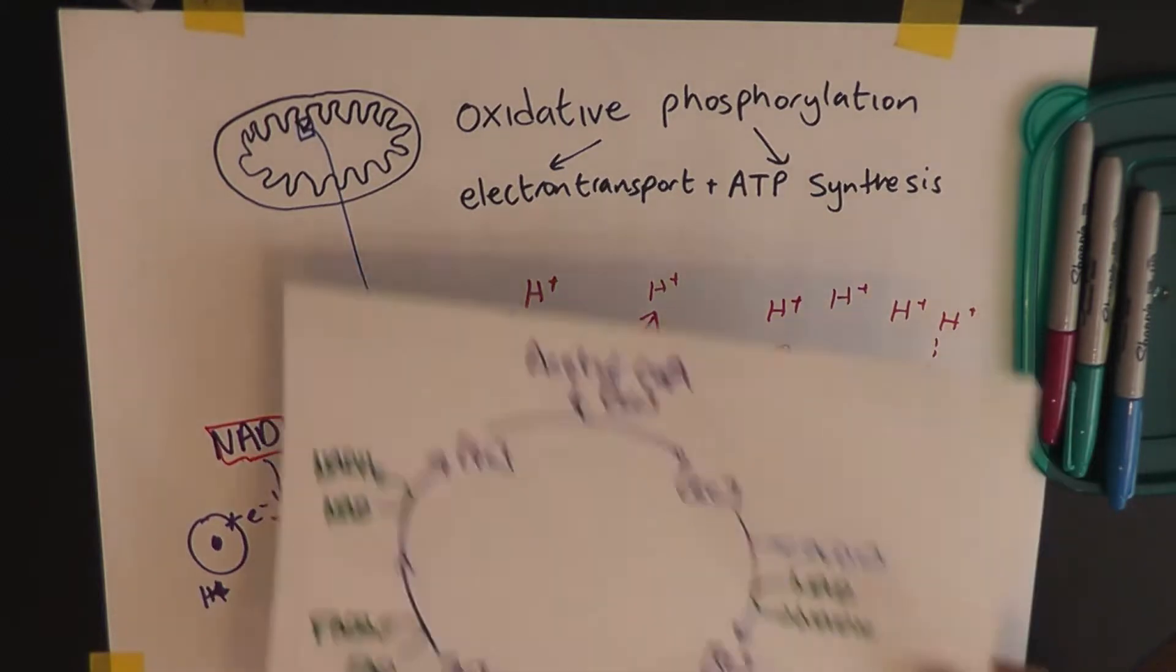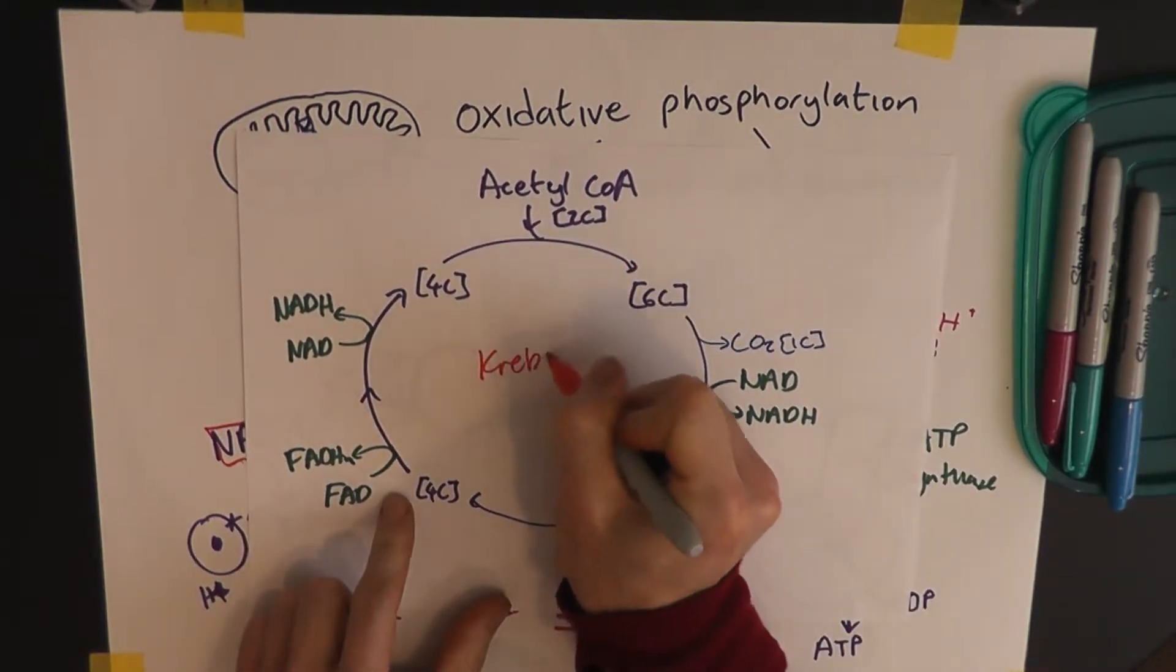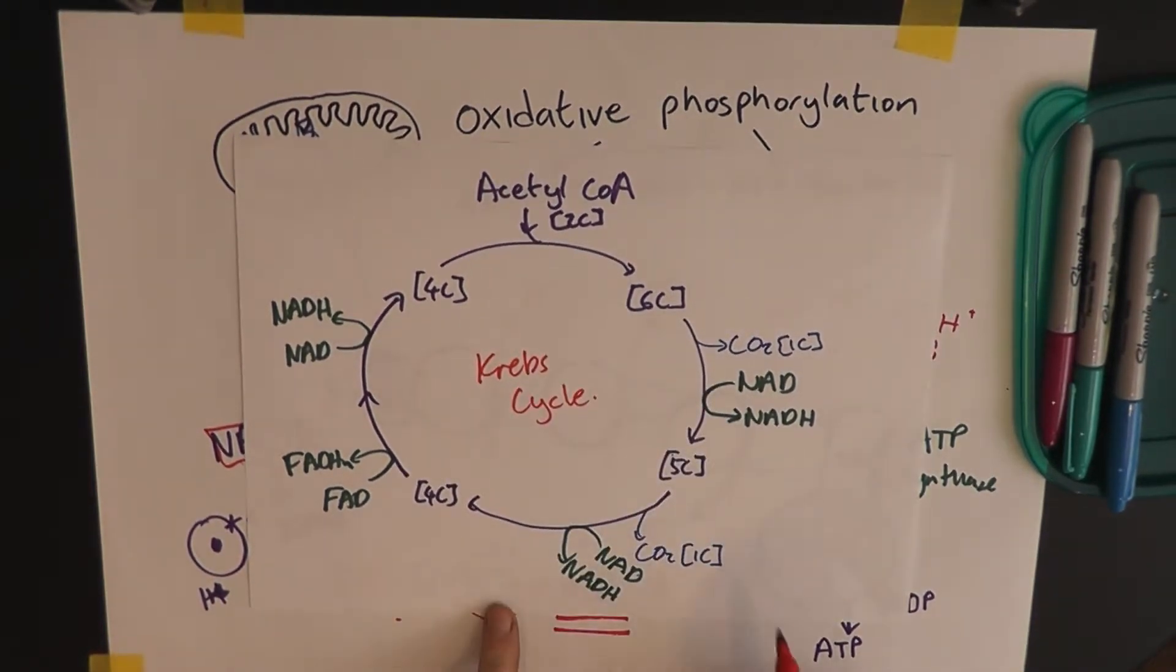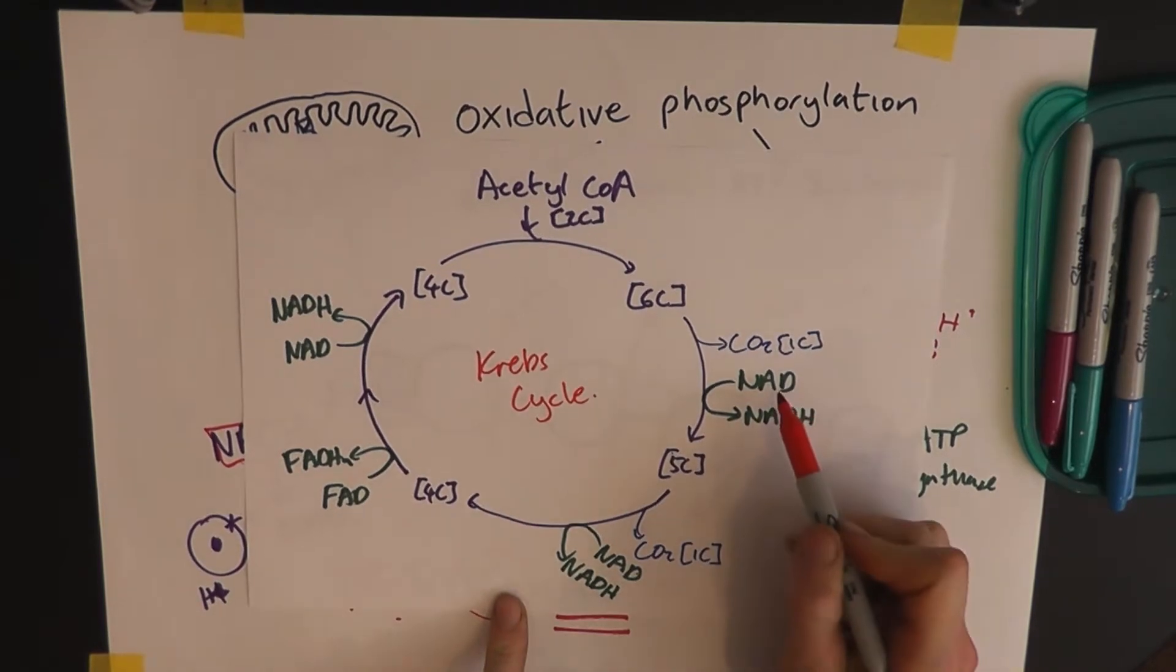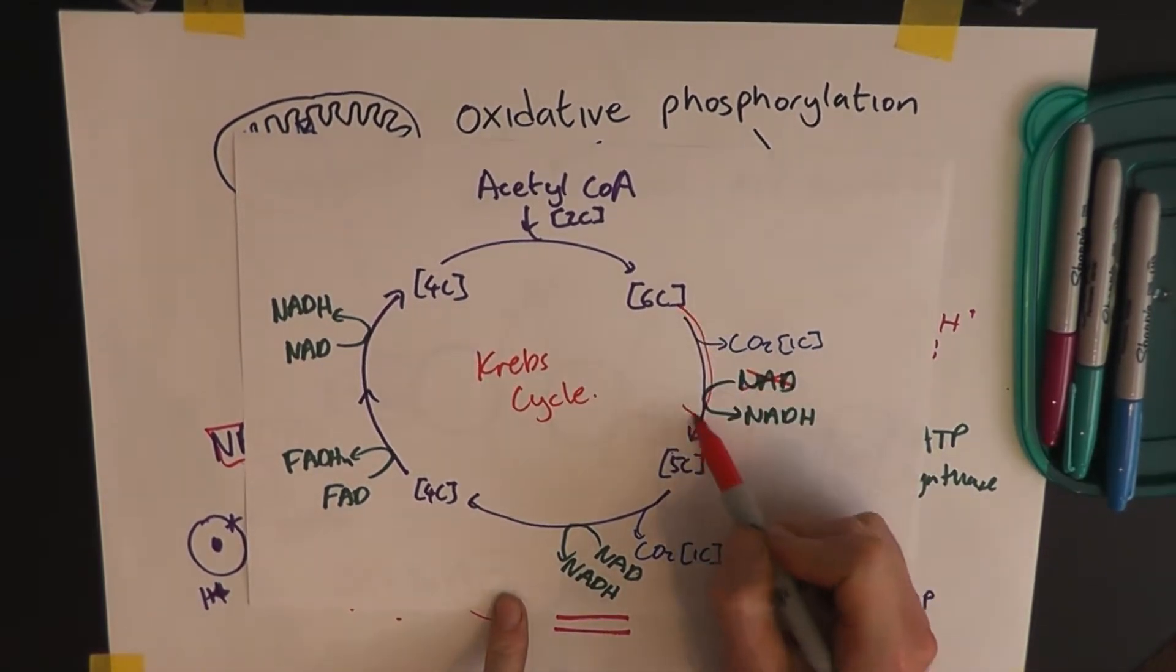Now, this is the Krebs cycle. And, as you can see, you need empty NADH. So, if you have no empty NADH, you can't do this stage. That just doesn't happen.